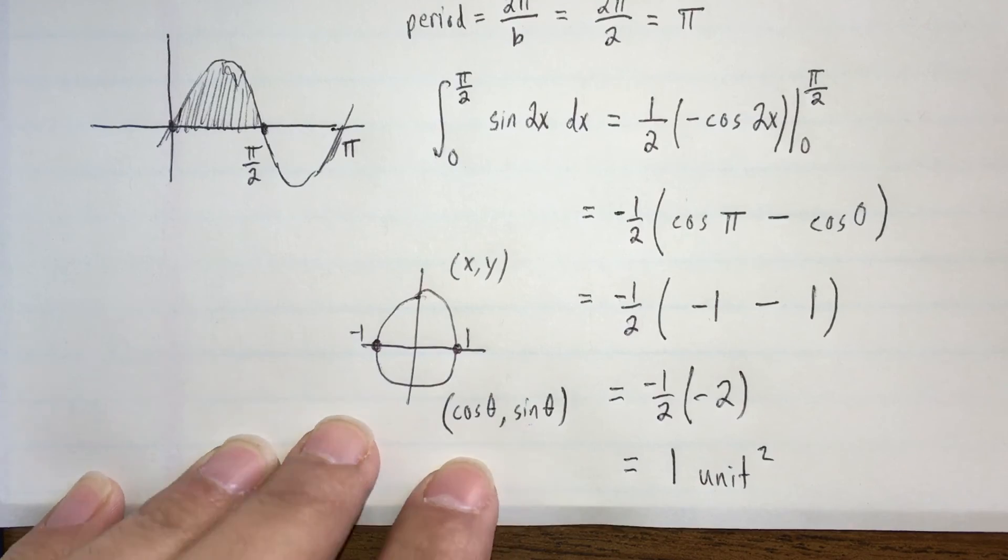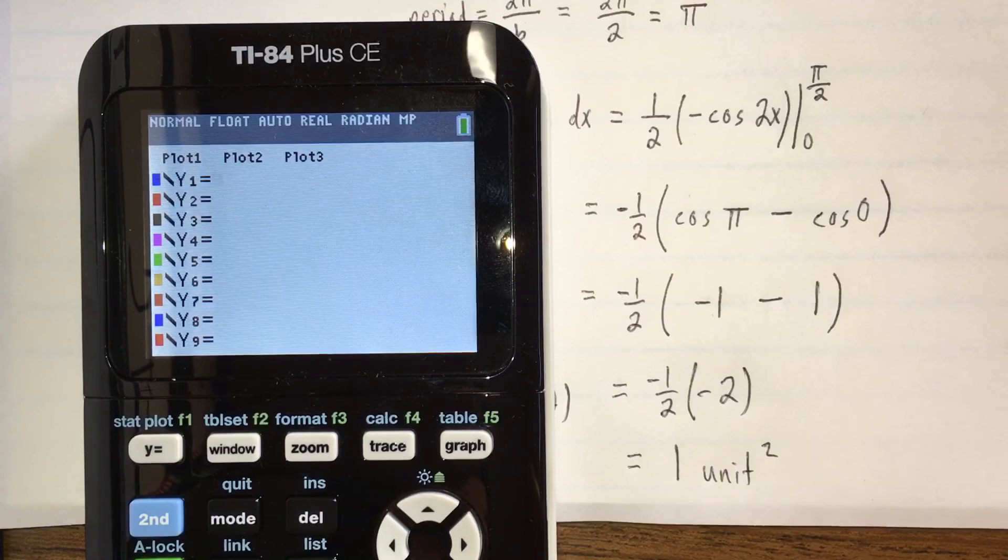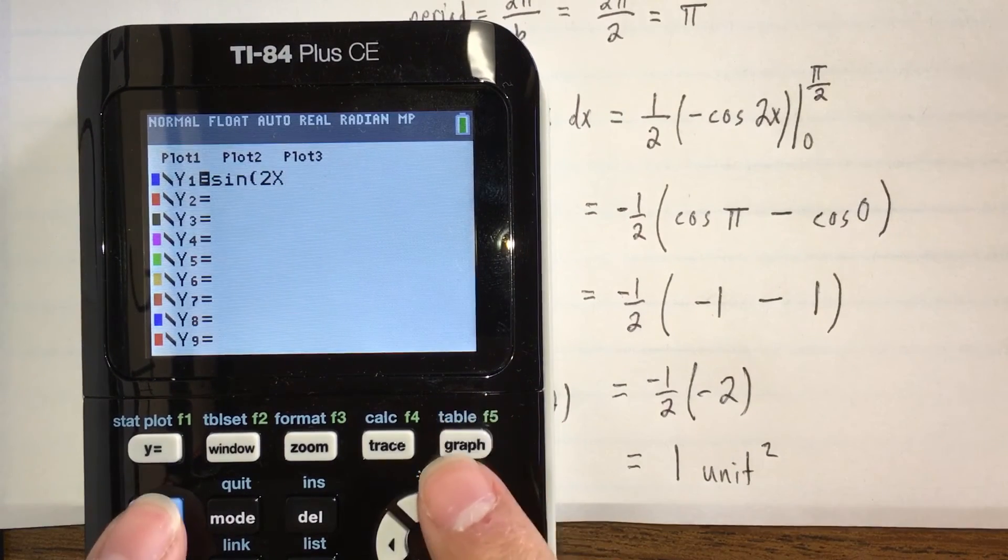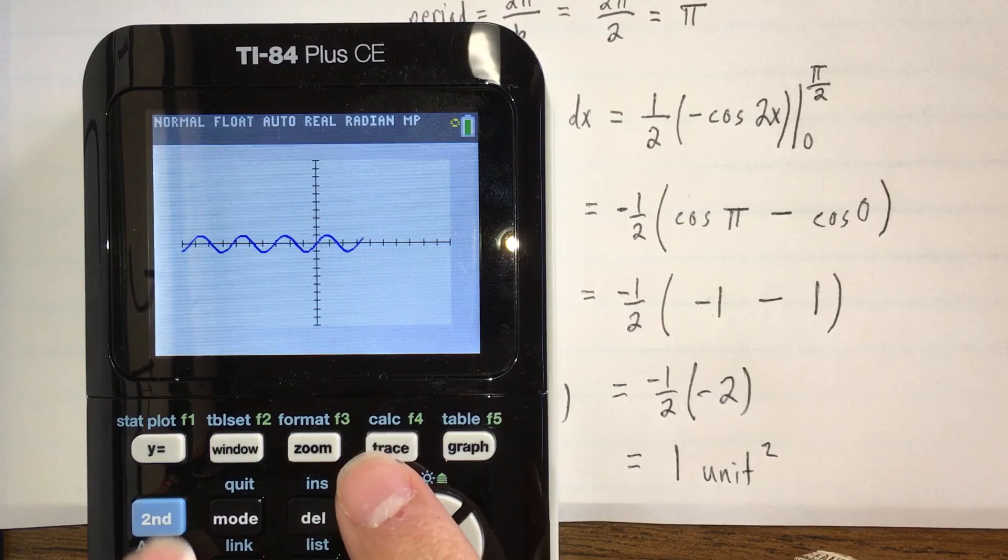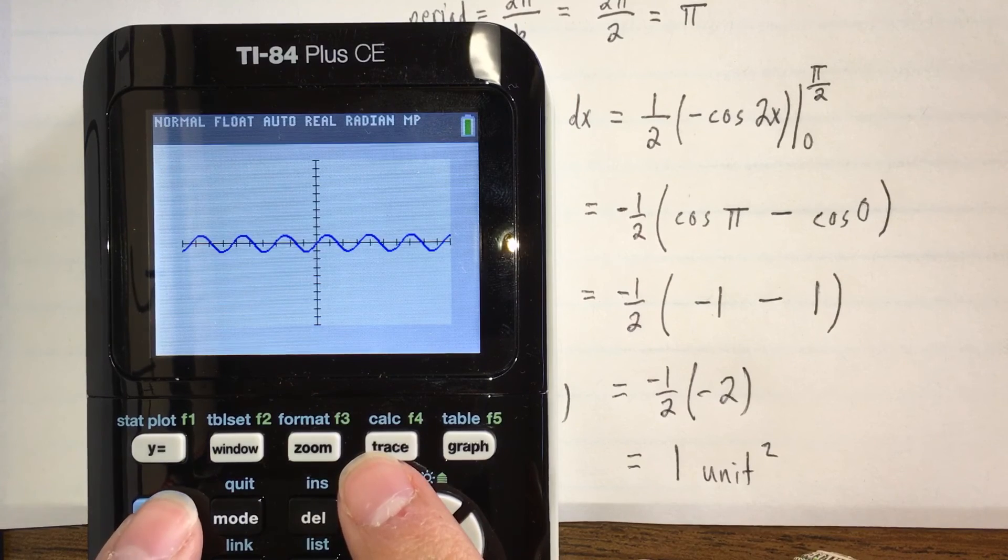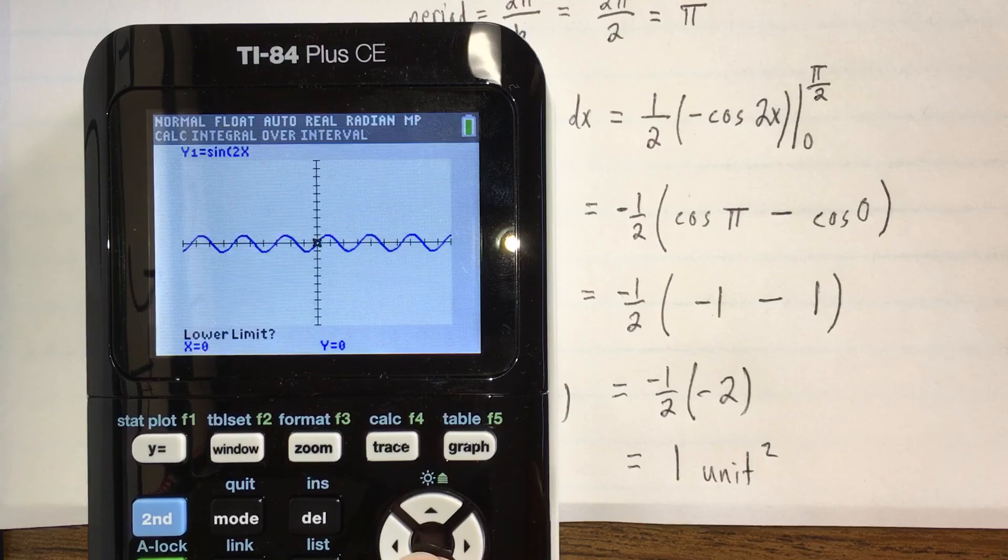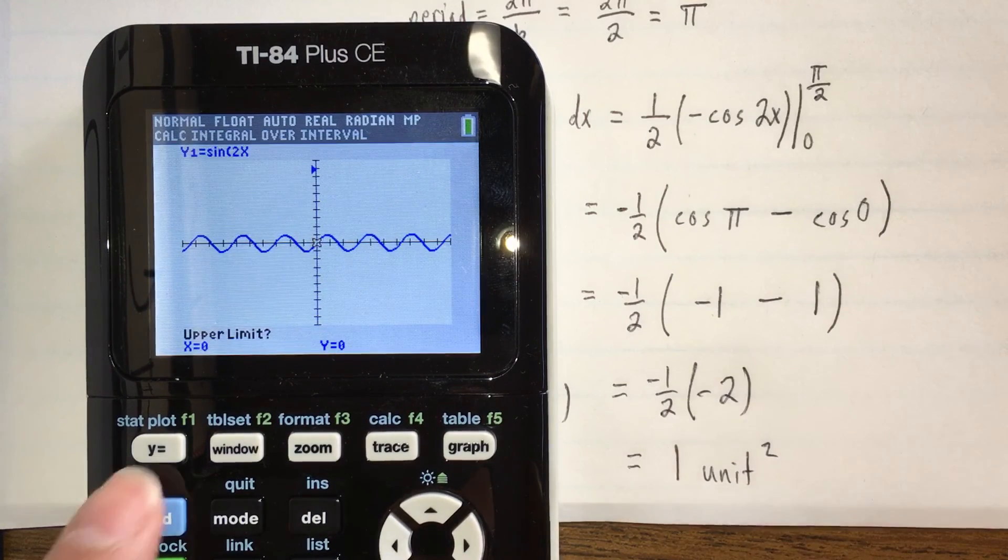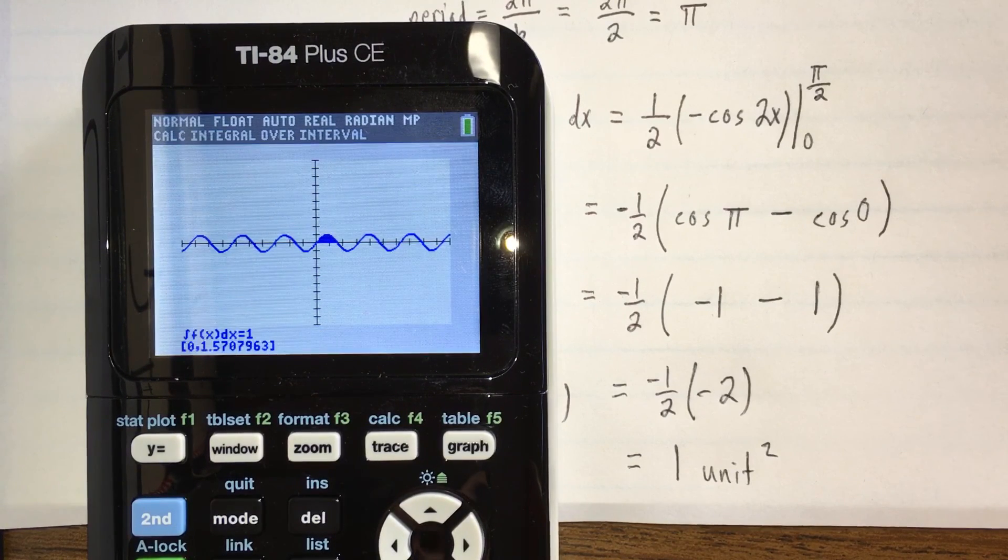We're going to check our answer with technology and see if we're correct. So we have our function sin 2x, we can graph it, and we're going to find the definite integral. So calculate, option 7, our lower limit is 0, our upper limit is π divided by 2, and our answer is 1.